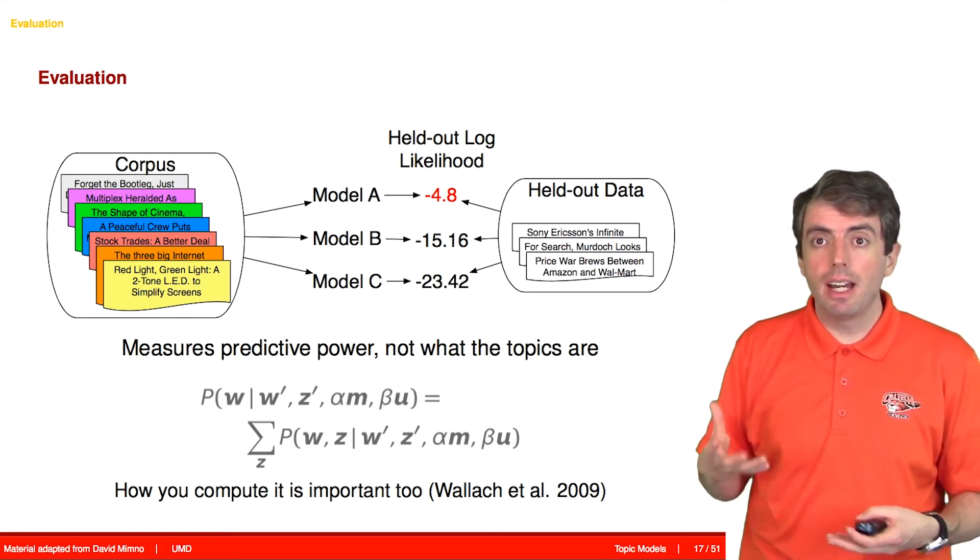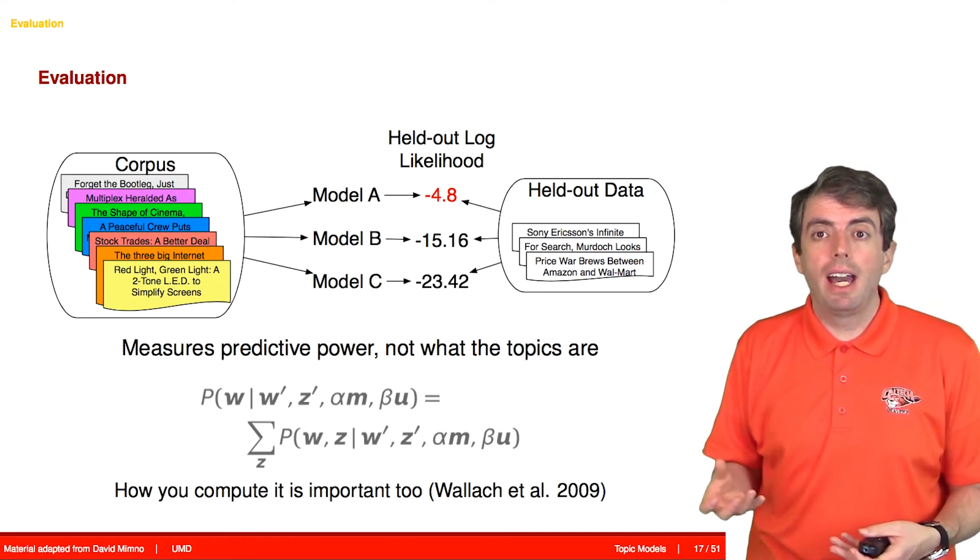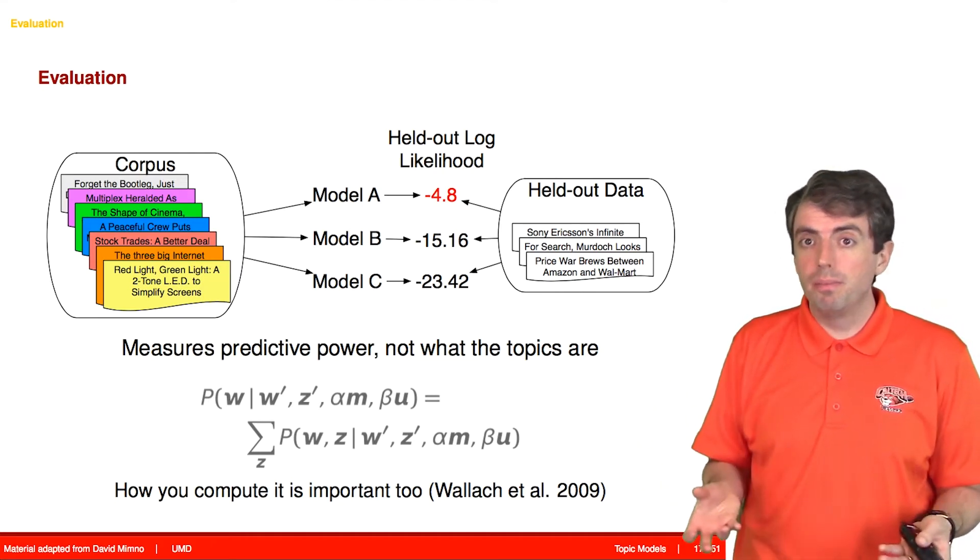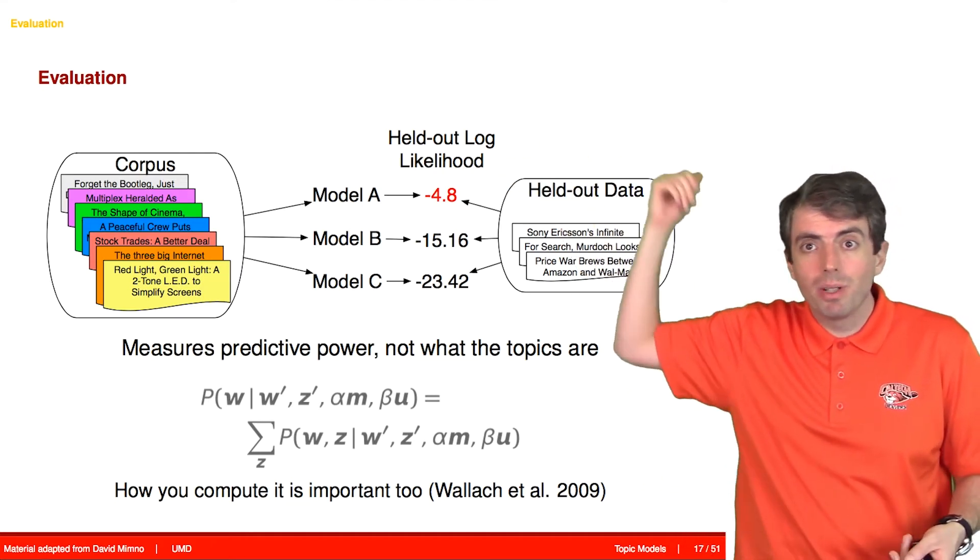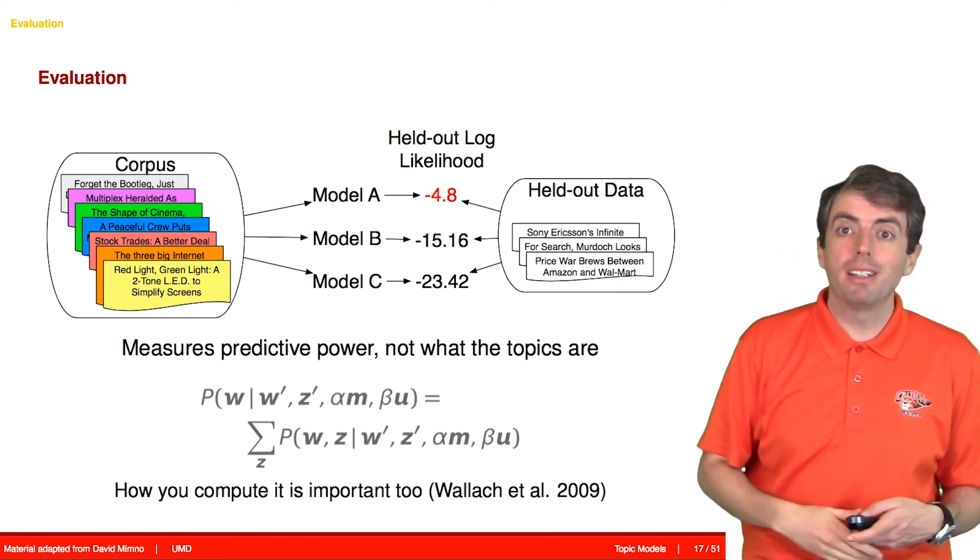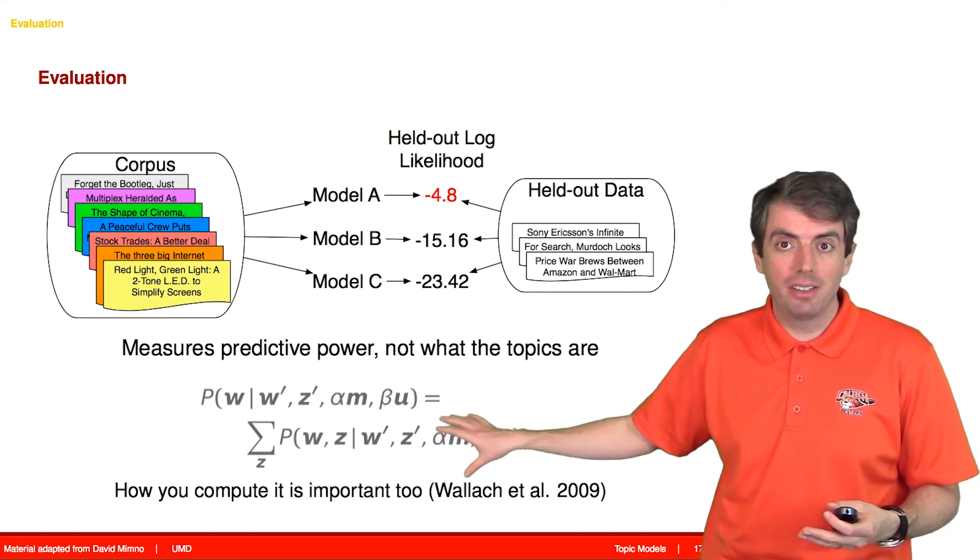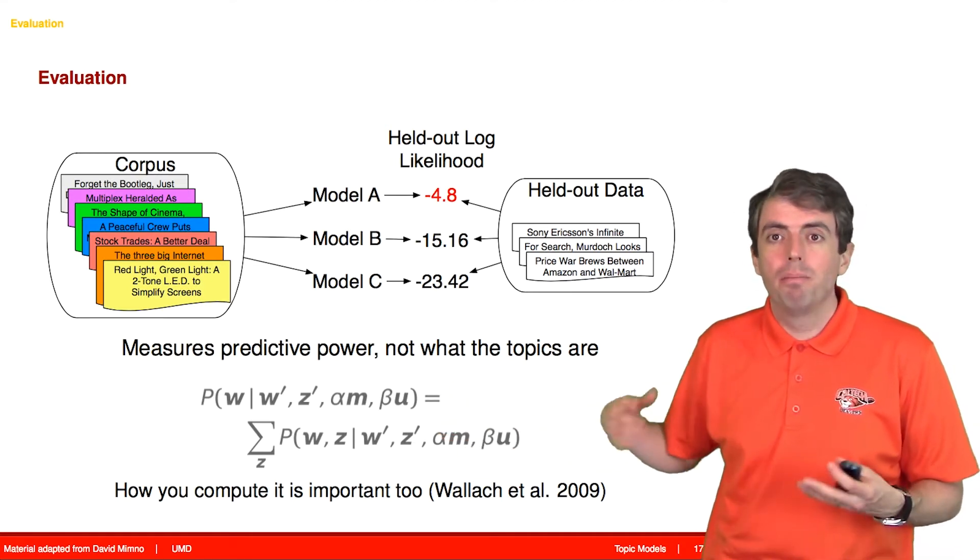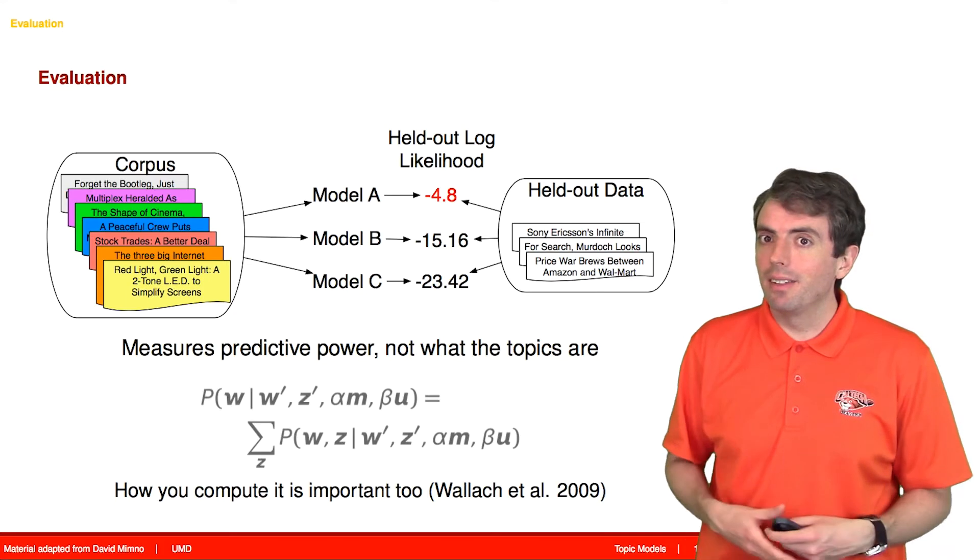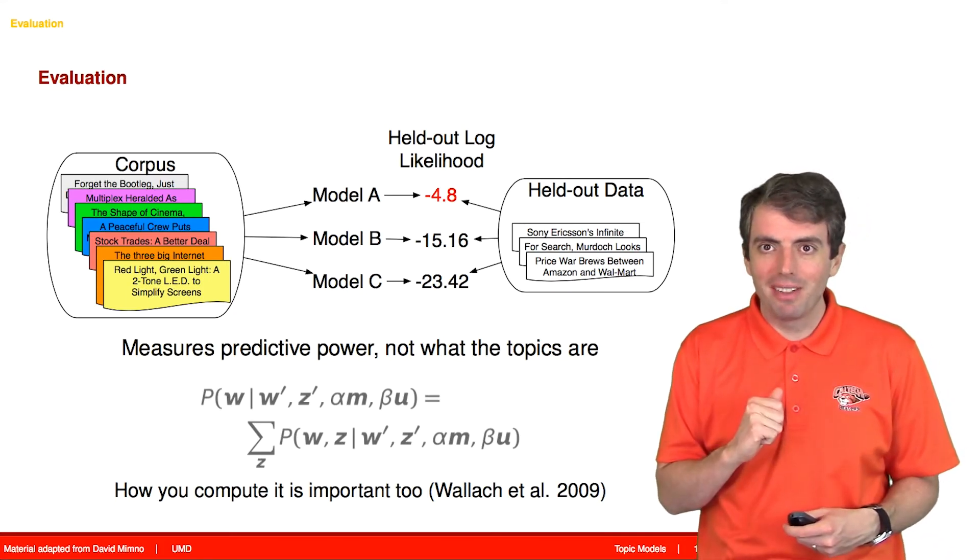And so the higher the held-out likelihood, the better. And the traditional approach would say, take whichever number is the highest, and that model is your winner. There are some important implementation issues about how you actually compute the held-out likelihood, but this is very straightforward. Why isn't this a good idea, is what we'll talk about next.